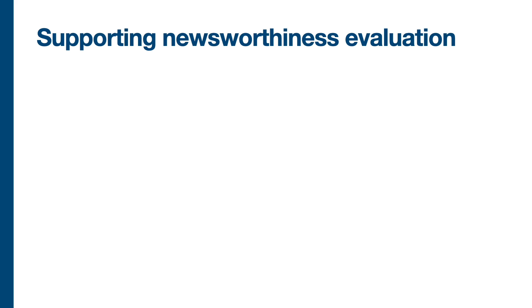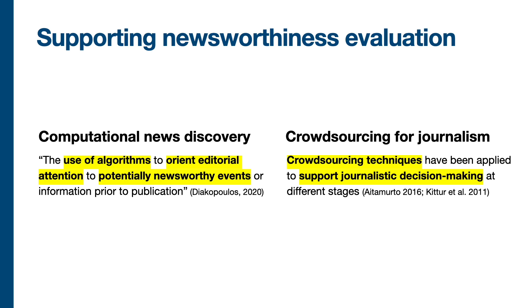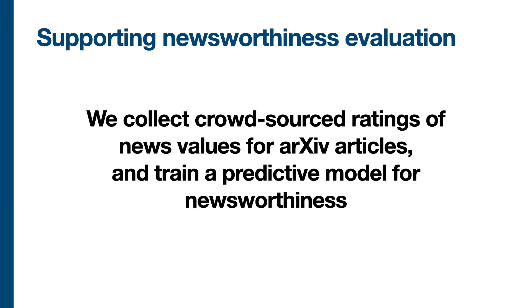In order to do this, we look at two key areas of work that have sought to assist journalists with different tasks in the news development pipeline. The first is computational news discovery, defined as the use of algorithms to orient editorial attention to potentially newsworthy events or information before publication. The second is the use of crowdsourcing for journalism, which means using insights from crowd workers to support journalistic decision making at many different stages. We borrow from and build on prior research in both domains, designing a system where we collect crowdsourced ratings of news values for individual arXiv articles and use those ratings to train a predictive model for newsworthiness.